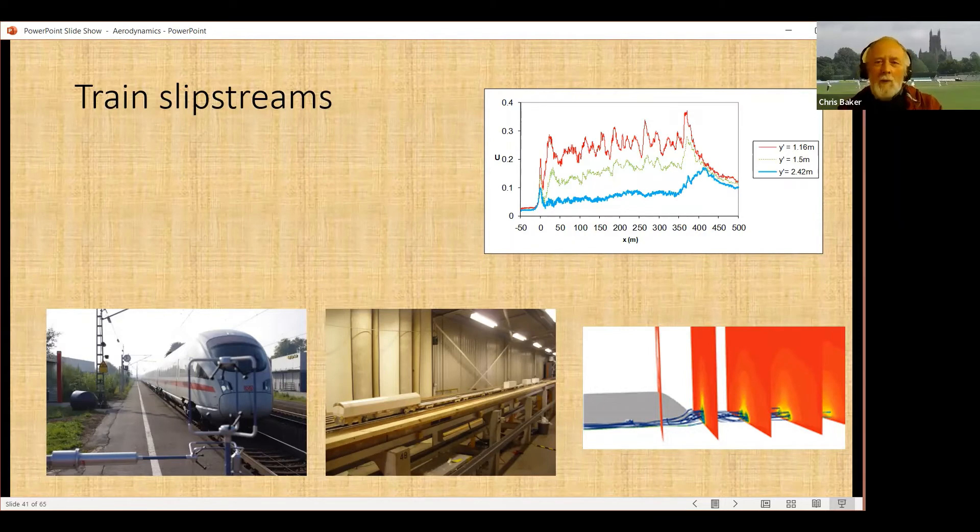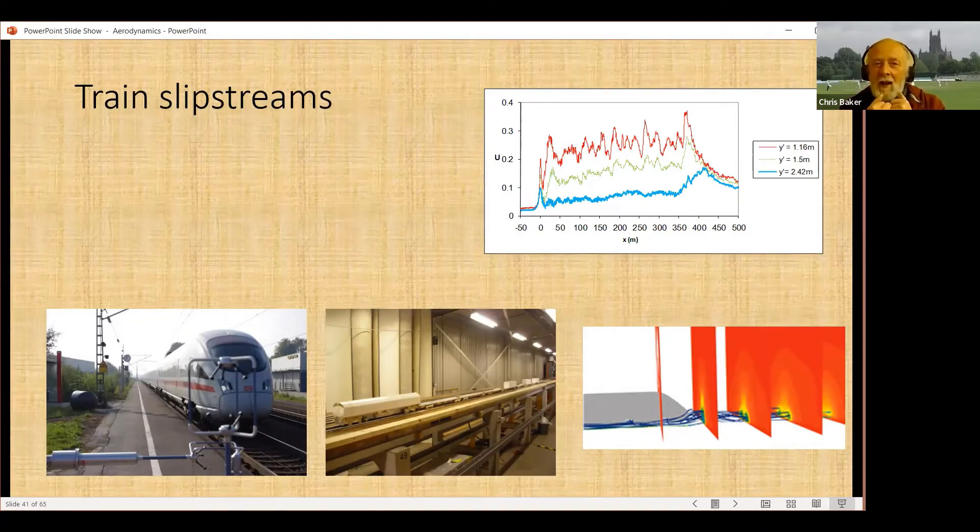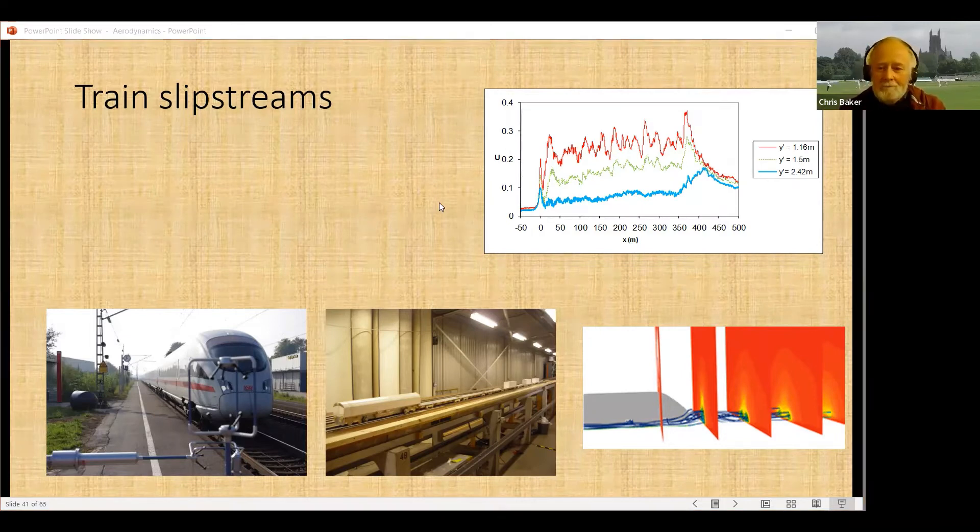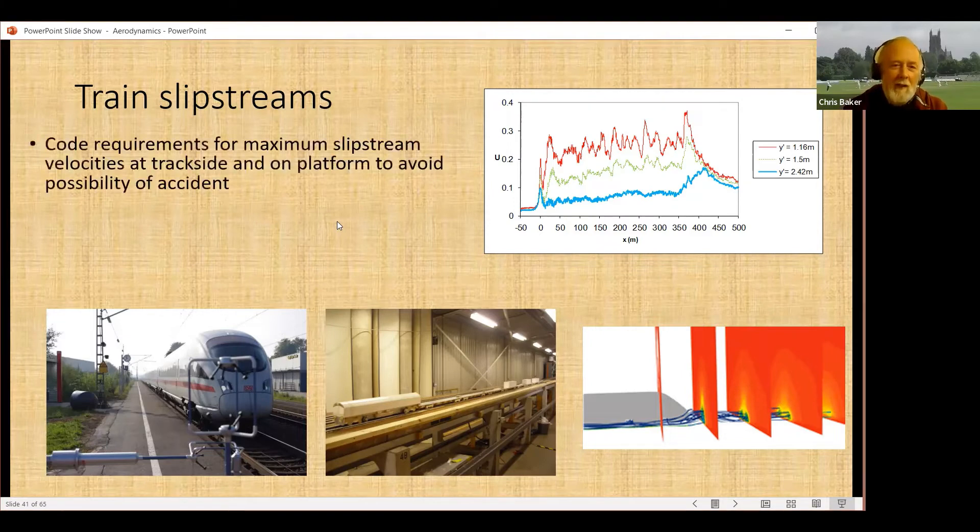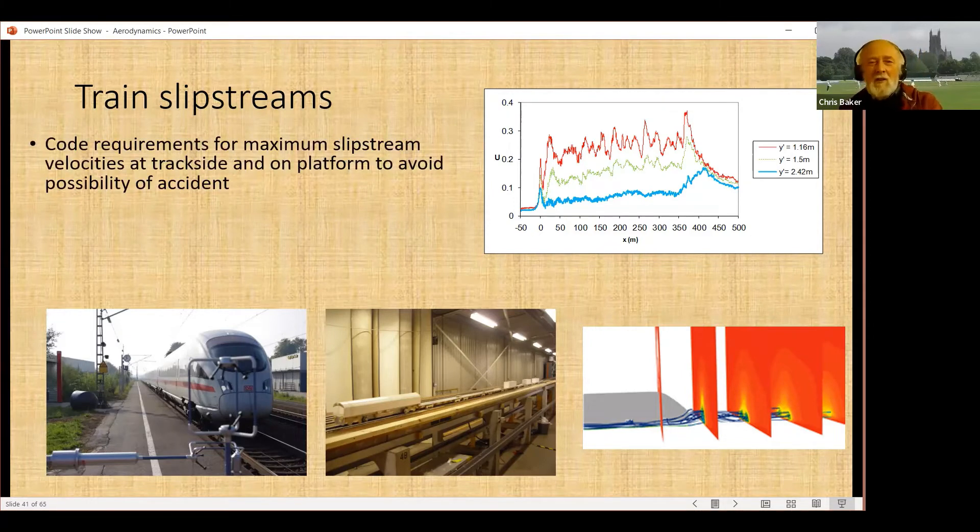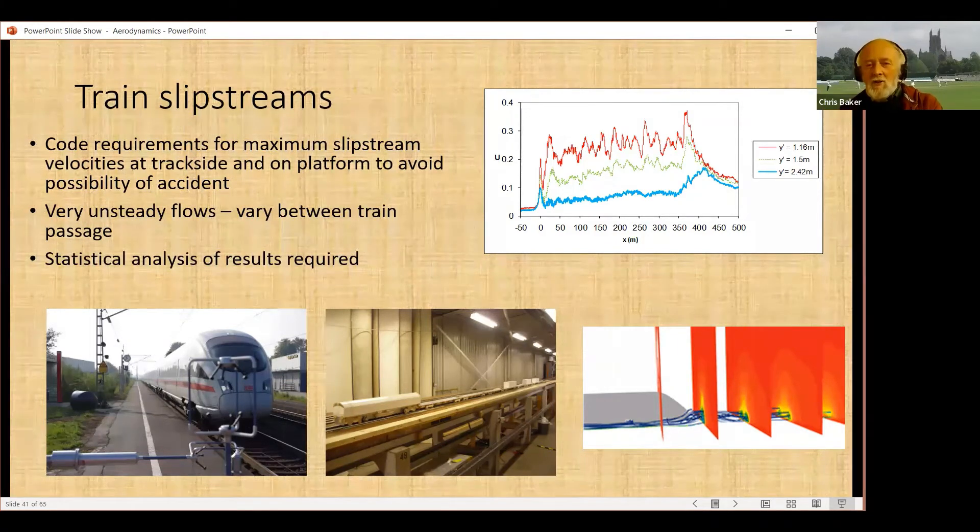Train slipstreams. When trains go by, not only do they produce a pressure pulse, but they produce a very strong airflow, particularly along the train side and behind the train. We made lots and lots of measurements of that. The graph at the top shows the velocity of airflow along the train as the train goes by. There's actually a peak in the wake as a rule. There are certain levels of slipstream that you have to avoid. They're very unsteady flows, and you have to learn how to deal with them through some sort of statistical analysis.